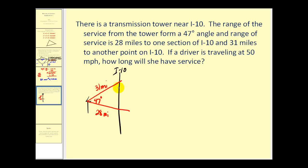This would be the distance where the driver would have service. So let's go ahead and label this D. We first need to find this length and then determine how long it will take that driver to go that distance driving 50 miles per hour. So again, we can find the value of D using the law of cosines.